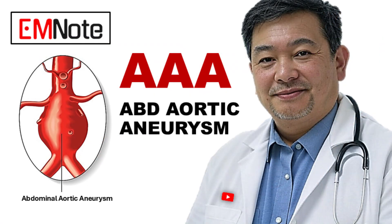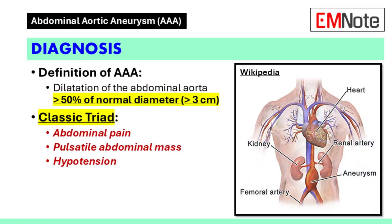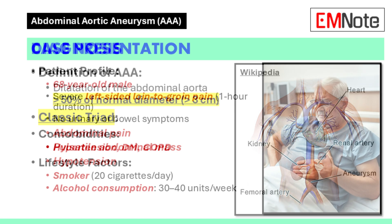Abdominal aortic aneurysm. Abdominal aortic aneurysms are life-threatening conditions that require prompt recognition and management.